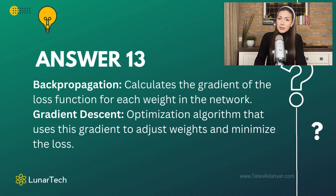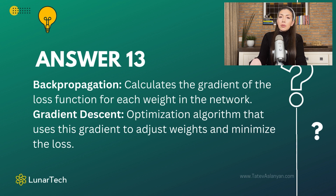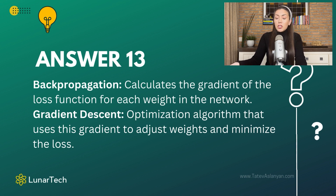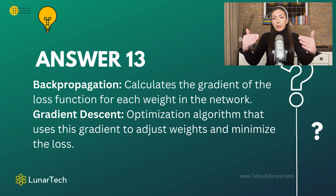The output of backpropagation is simply used as an input for gradient descent, or any other optimization algorithm, in order to update the model parameters. Gradient descent takes the computed gradients from backpropagation as its input in order to then update the model parameters.